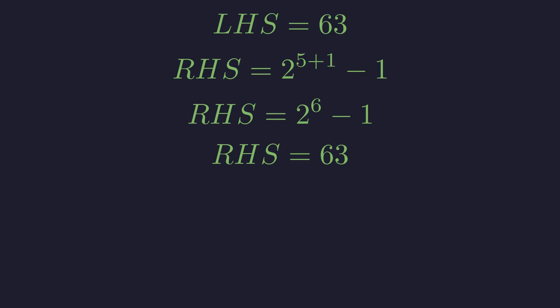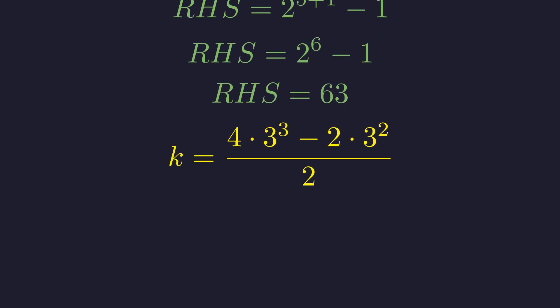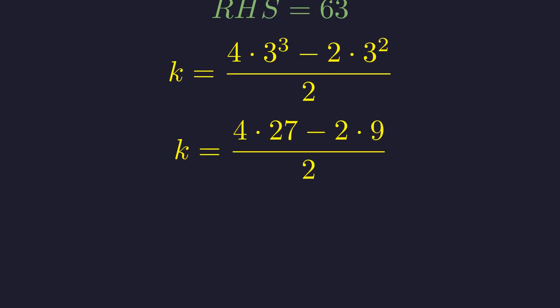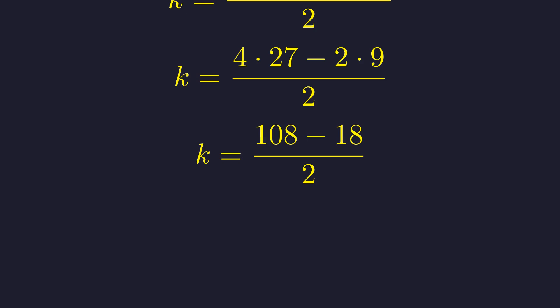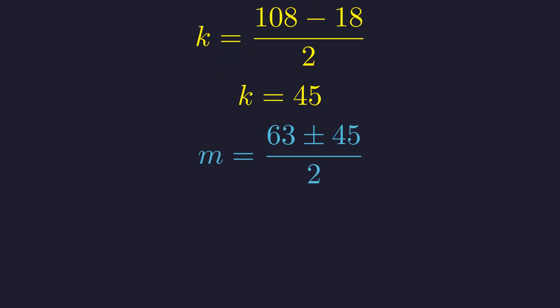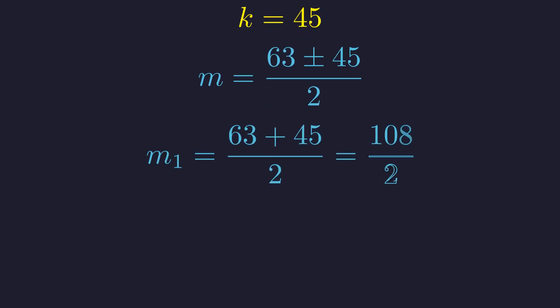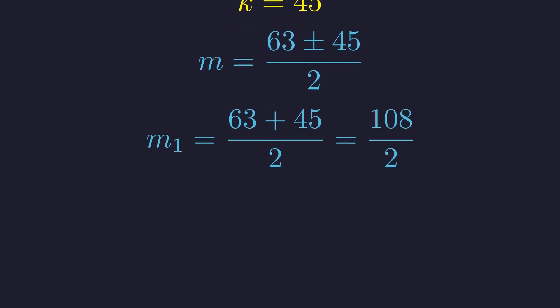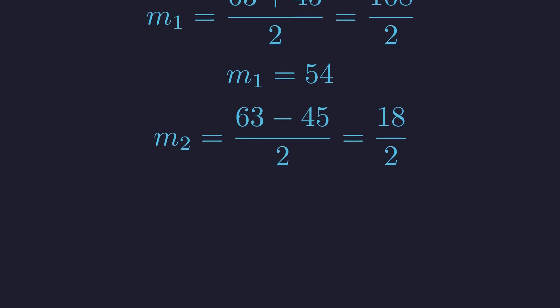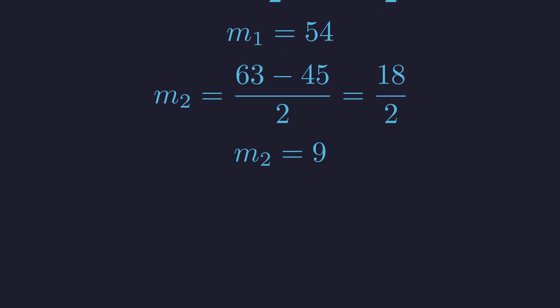Having confirmed n equals 5 is a valid case, we now calculate the corresponding values of m. First, we calculate k from the difference between b and a. Evaluating the powers in the numerator, then performing the multiplications and simplifying, finally this gives k equals 45. We now substitute n equals 5 and k equals 45 into the formula for m. The first potential solution for m uses the positive sign, which gives m equals 54. The second potential solution uses the negative sign, which gives m equals 9. This scenario yields the pairs (54, 5) and (9, 5).